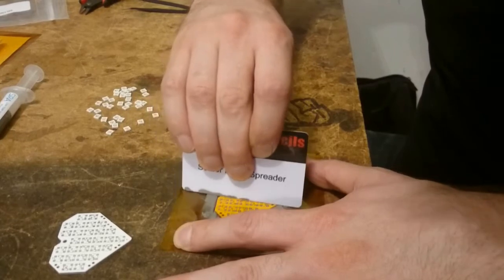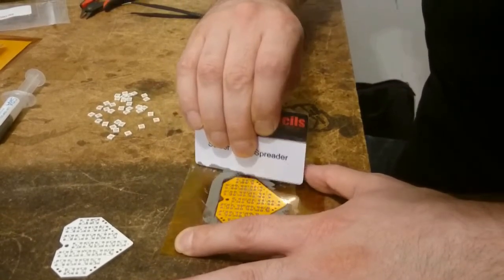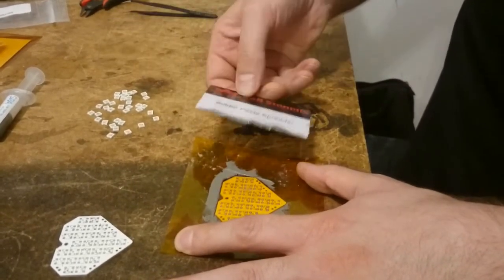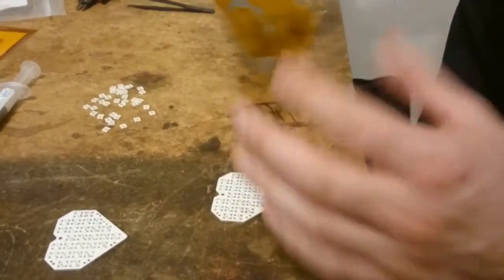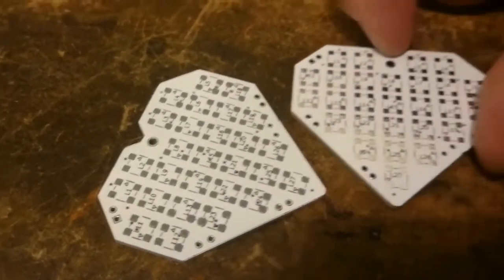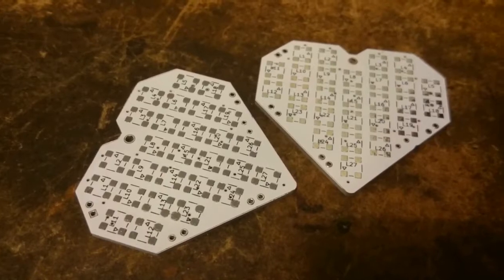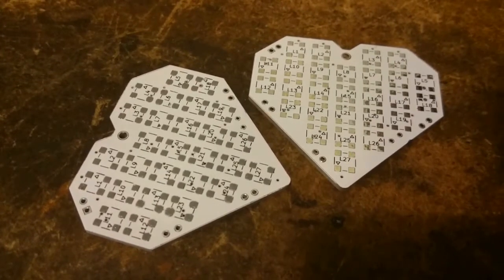Once we're satisfied with that, we scrape off the excess, try not to make too much of a mess, lift off the stencil, and now we have a circuit board covered in solder paste, which as you can see is significantly less shiny, and hopefully will stick to components.